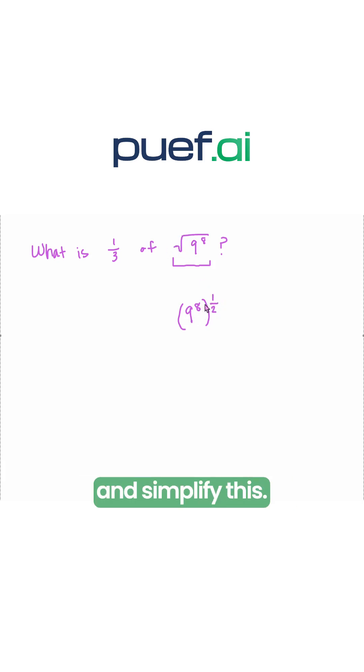Now we can go ahead and simplify this. So 8 times 1 half really gives us to the power of 4. So this is 9 to the power of 4.